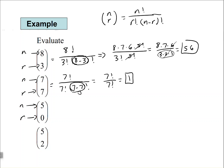Let's take a look at the next one. We have 5 factorial over 0 factorial times (5 minus 0) factorial. This is another special case: 0 factorial equals 1, so we end up with 5 factorial over 5 factorial, which is 1. Any time r is zero and n is greater than zero, the result will be 1.